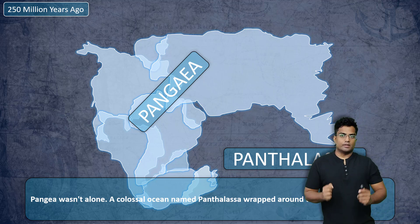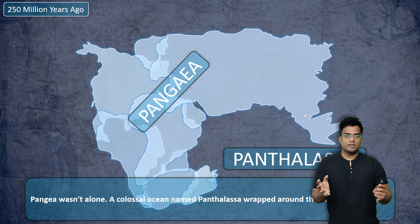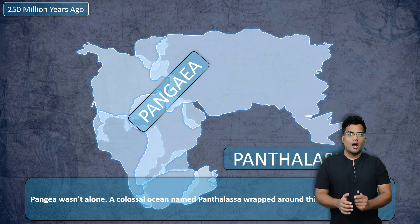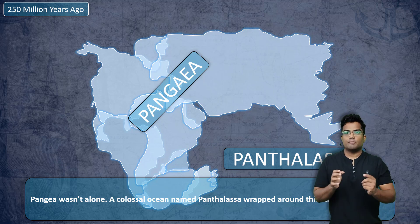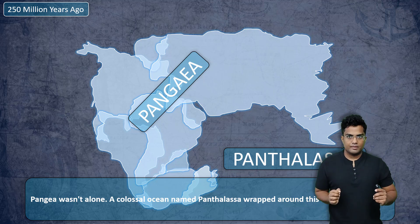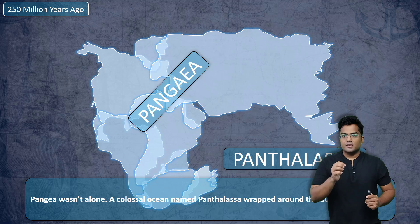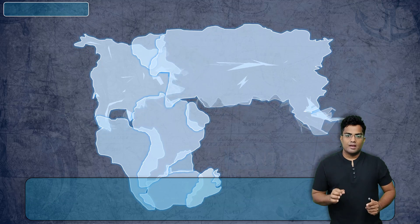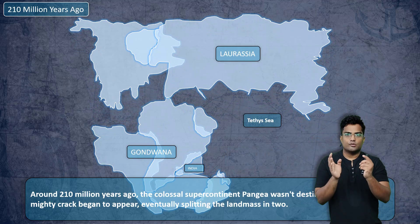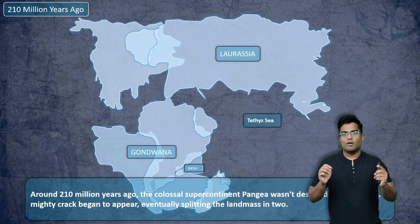Deep inside our Earth, there are many molten materials. These molten materials create tectonic activities and disturbances on the surface. Because of the pressures and gradients, there are disturbances in the tectonic plates, which eventually leads to the cracking of Pangaea.